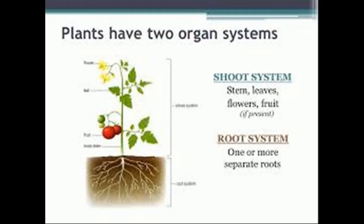The root system includes those parts of the plant below ground, such as the roots, tubers, and rhizomes.